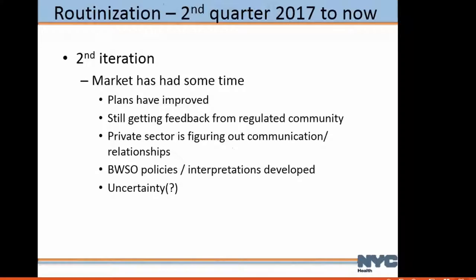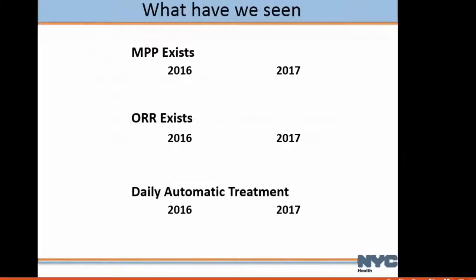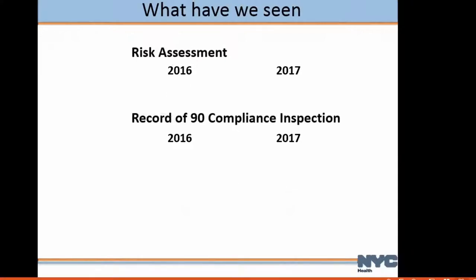In the second iteration, the market has had some time and plans have improved. We're still getting feedback from the regulated community, and it's getting better. In 2016, major violations included: did the plan exist, did records exist, did systems have daily automatic treatment — they're not required to have it but it does make things easier. And here's what we see now — lots of improvement. Same thing with the risk assessment: did they have a risk assessment with the proper elements, and do they have a record of all four of the previous 90-day compliance inspections? There's improvement there too, though the compliance inspection number is probably a little low because we're looking back at all four quarters and those first quarters would have been missing.